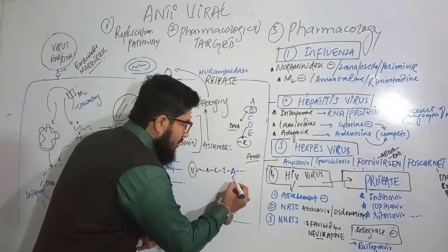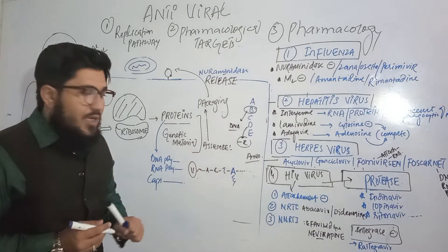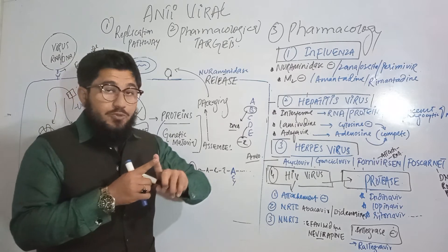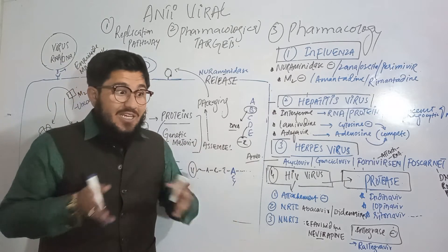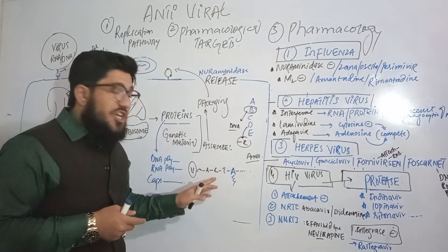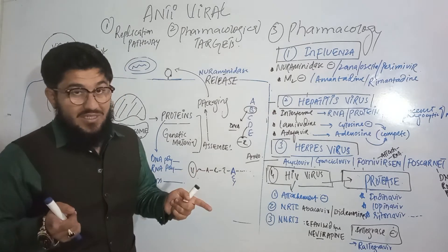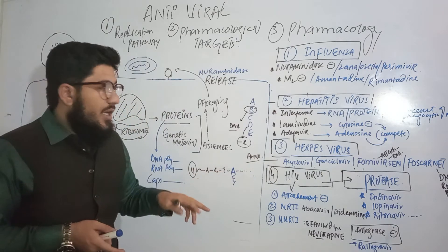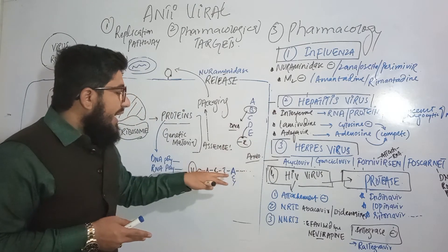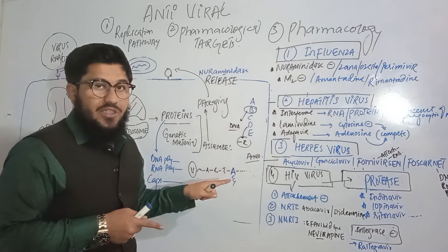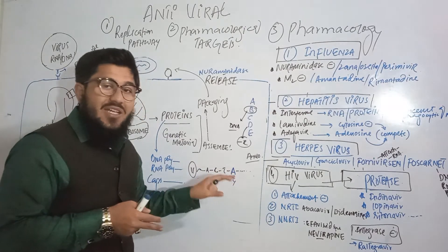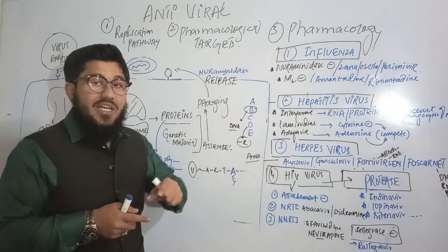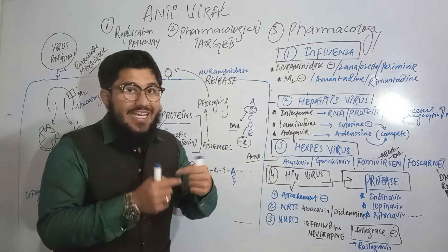When acyclovir binds in place of guanosine, chain elongation does not take place — this leads to chain termination, and the viral DNA is not synthesized. Similarly, gancyclovir is also a guanosine analog. When given, it displaces the normal guanosine, binds in its place, and again terminates chain elongation — thereby inhibiting viral DNA synthesis.